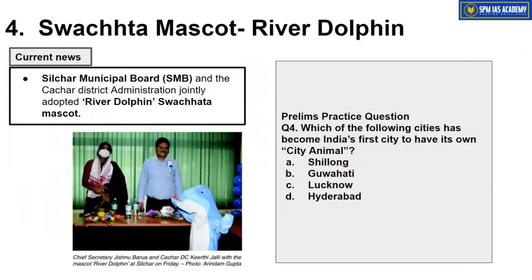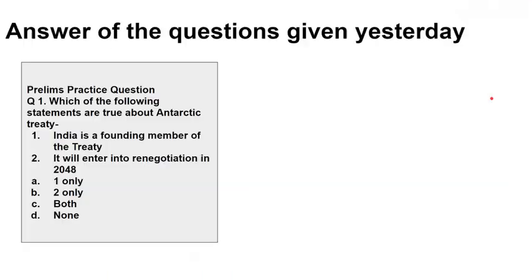Recently, the River Dolphin was in the news because Silchar Municipal Board adopted the River Dolphin as its Swachhata (cleanliness) mascot, to be placed at various locations to create awareness about cleanliness. The Cachar District Administration also adopted this mascot. A Prelims practice question has been provided on this topic — please attempt it and submit your answer in the comment section.